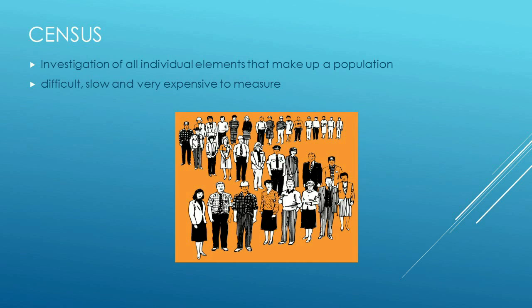Now that we understand population, think about how we ask the population a question. We really have two choices: ask everybody, or ask a representative sample. For most research, a representative sample is used — it's cheaper, faster, and easier. Sometimes, however, we insist on asking everyone, and that is known as a census. Censuses are very rarely used. The government does a census of Canada where everybody has an opportunity to contribute. But it takes a lot of time and energy, and for most research projects the payoff is not great enough, so it's rarely done.